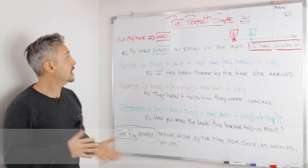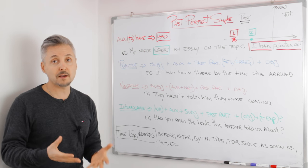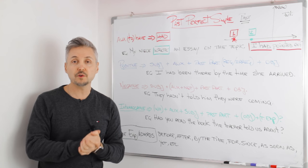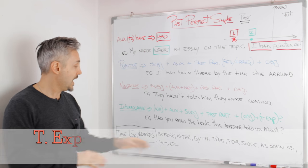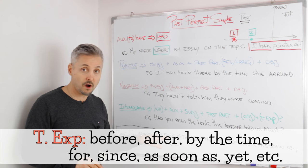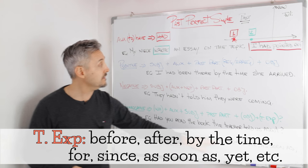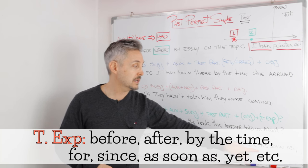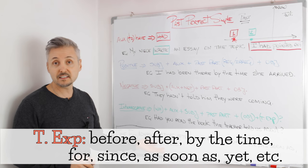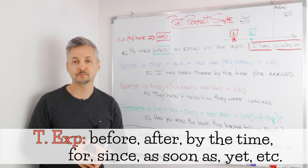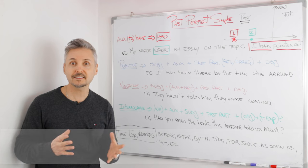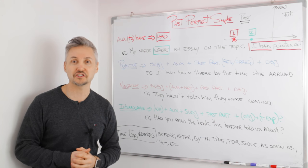Now, there are some indicators or time expressions and adverbs that we can pay attention to when we use the past perfect. And they are before, after, by the time as I used it here, for, since, as soon as, yet, etc. Now, I'm going to erase this and we're going to look at sentences that end with a preposition.